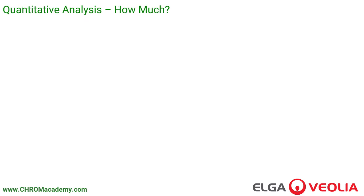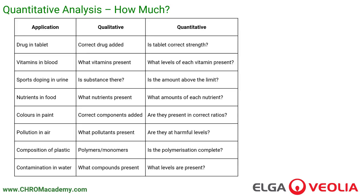The second aspect is something called quantitative analysis: how much of those substances are present in our sample? Applying that to our examples — for a drug in a tablet, we've checked qualitatively what drug is present and the correct one is there. Quantitatively, we're looking at whether the tablet is the right strength — how much of that material is present.